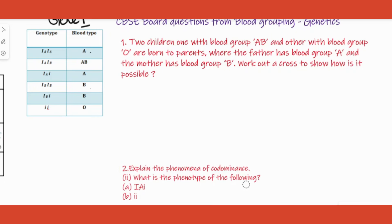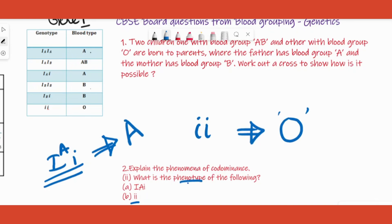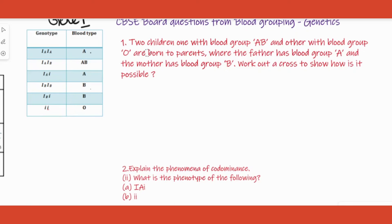The second part of the question: which blood group is the phenotype for genotype Ia i? Simple — you get blood group A. For genotype ii, the only possibility is blood group O. Phenotype means what you can see — a visible trait, like height. Here, blood group is the phenotype: Ia i gives A, and ii gives O.